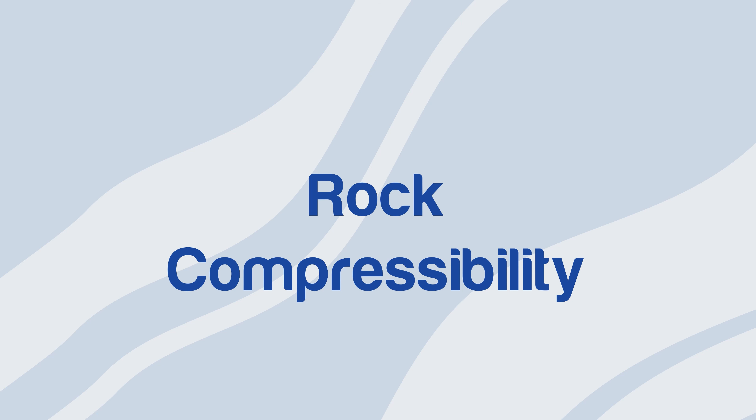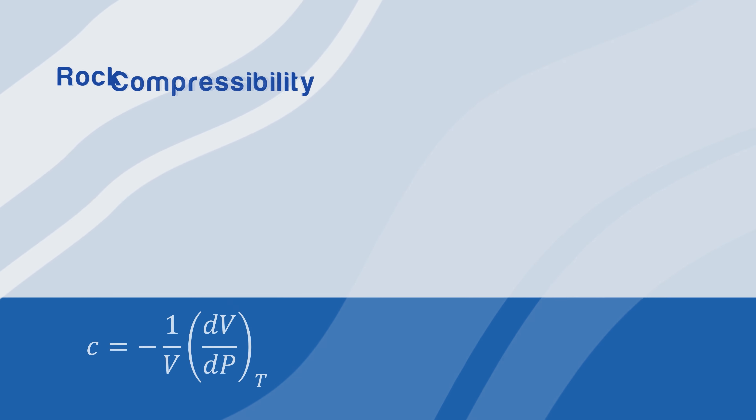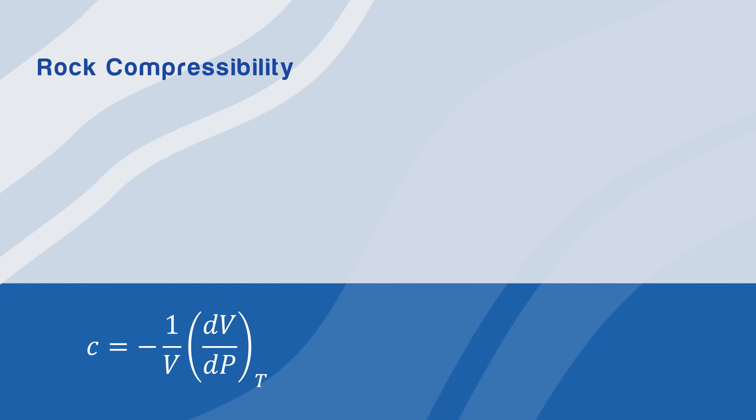Rock compressibility can be defined as the relative change in pore volume with changes in compaction pressure in the reservoir. The general form of rock compressibility is shown here.